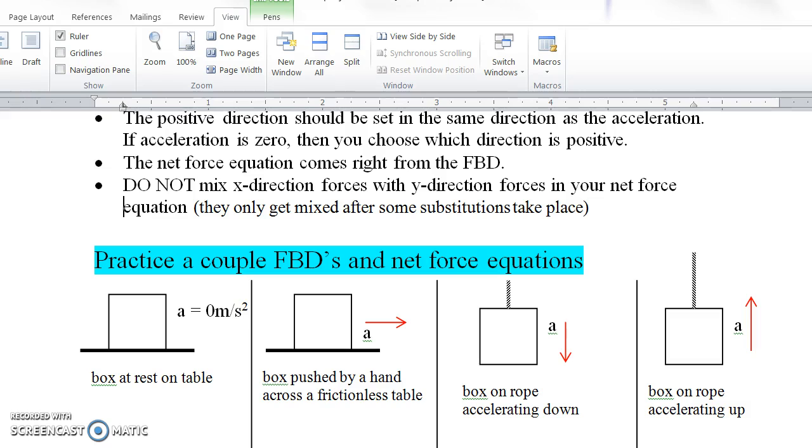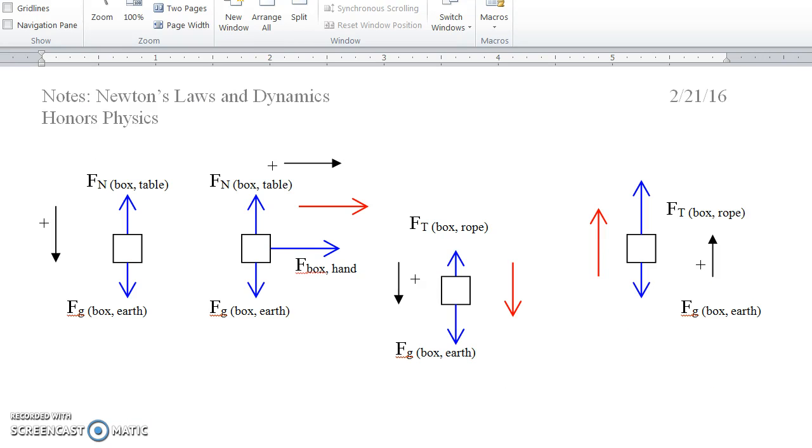To finish off this video, I'd like to give you some free body diagrams to practice. I have here a box at rest on a table, so its acceleration is 0 meters per second squared. We have a box being pushed across a frictionless table, so there's no friction holding it back. It accelerates to the right. We have a box attached to some rope at the top, accelerating downwards. And we have the same box now accelerating upwards on the rope as well. I'd like you to go ahead and give these a try. Stop the video here and pick up with me once you've actually done these.